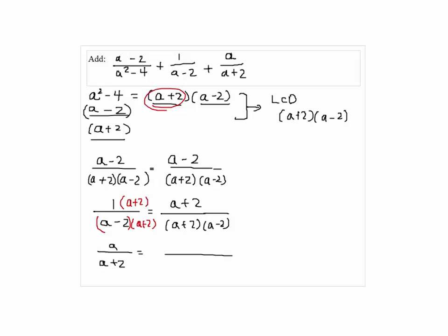And the last fraction is missing a minus 2, so we multiply a minus 2 by top and bottom. So we have a plus 2 times a minus 2, and in the numerator we have a squared minus 2a.